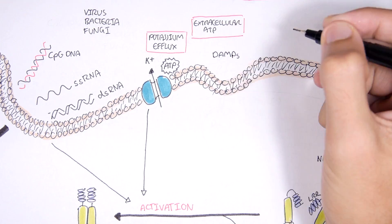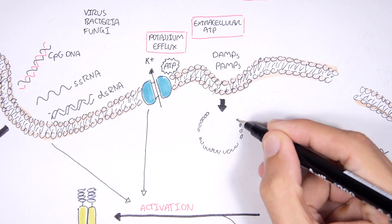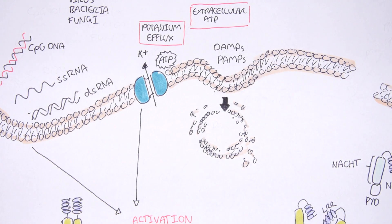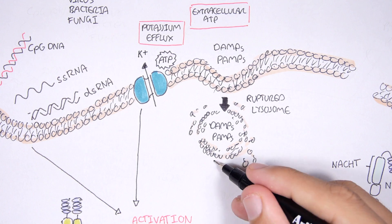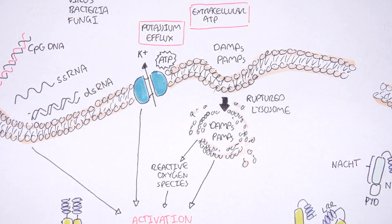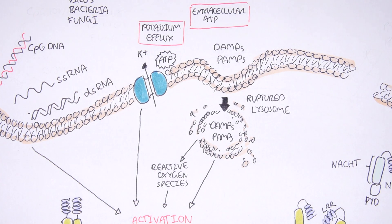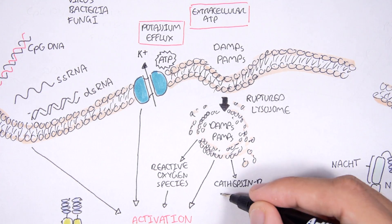Engulfed DAMPs and PAMPs form a phagolysosomal vesicle, and rupturing of this vesicle can induce NLRP3 activation. This can occur through the release of reactive oxygen species (ROS), the DAMPs and PAMPs themselves, as well as cathepsin B, a component of the lysosome.